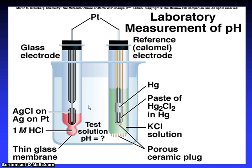Laboratory measurement of pH. Glass electrode, reference calomel electrode. Silver chloride on silver on platinum. One molar KCl. Thin glass membrane. Test solution. We want what is the pH of that solution? You have mercury, paste of mercury, mercurous chloride in mercury. KCl solution, porous ceramic plug.